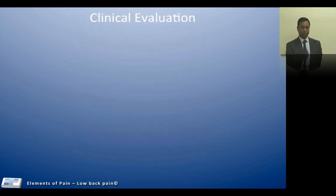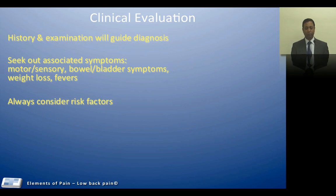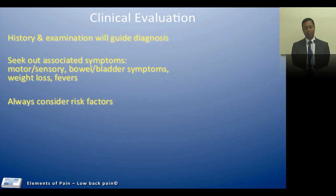When we talk about clinical evaluation, a history and examination will guide diagnosis, but it is important to also seek out other associated symptoms. Bearing in mind the risk flags and their categorization — if they are present, any bowel or bladder symptoms especially ruling out cauda equina, weight loss, fevers — remember tuberculosis — all of this needs to be evaluated during a detailed history.